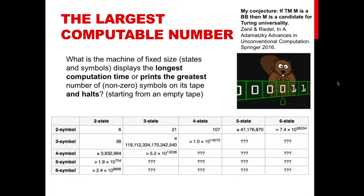Let me start with the first question on the behavior of Turing machines. This is actually a game that some people, and even researchers, study and play. The question that drives the game is to find the Turing machine that, given a number of symbols and states — basically given the size of a Turing machine — takes the longest computation time to halt among all machines of the same size. A similar question is which machine prints the most ones, among all machines of the same size. That Turing machine is called the Busy Beaver, because it looks very busy — more than any other machine of the same size.